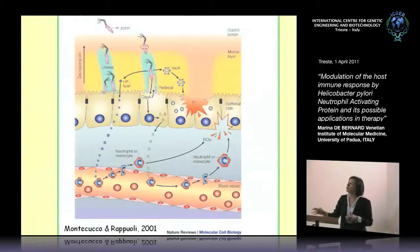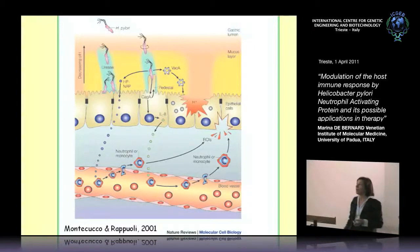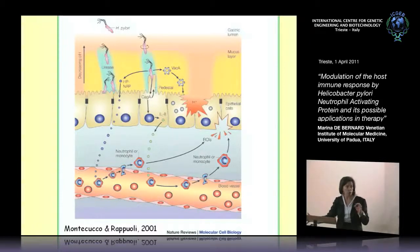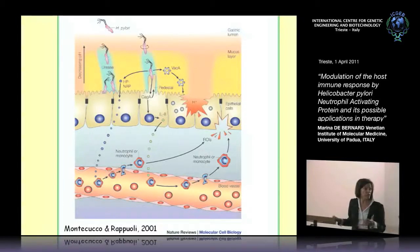H. pylori produces several factors, such as VacA, such as CagA, but also a particular protein called H. pNAP, and we decided to focus our attention on this protein in order to understand whether it could be involved in the inflammation triggered by H. pylori.